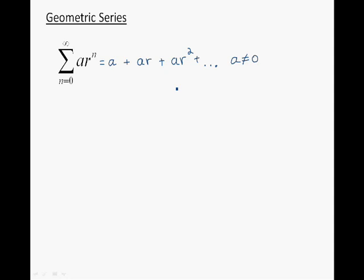The next topic is called geometric series. Geometric series have the following form. Let's begin by writing out a few terms of this series. Here are the first three terms, and we note that A has to be different than 0, because if A is equal to 0, then all of the terms disappear.